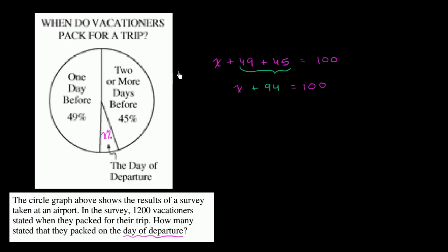And now we can subtract 94 from both sides to solve for x. So subtract 94 from both sides. And we are left with x is equal to 6. So 6% of the people packed on the day of departure.